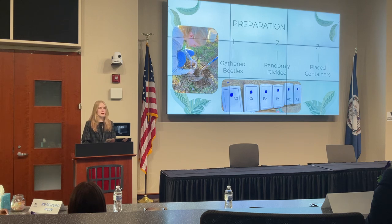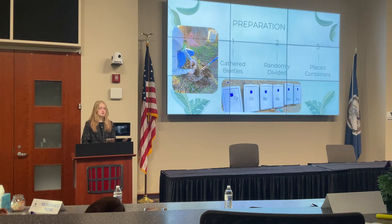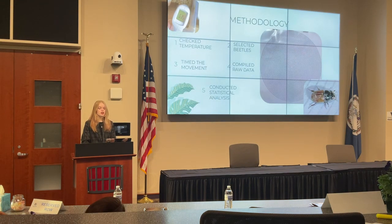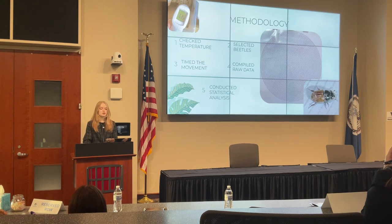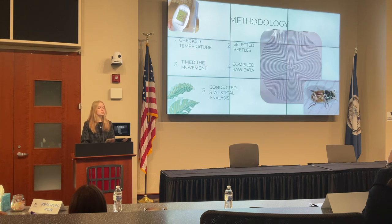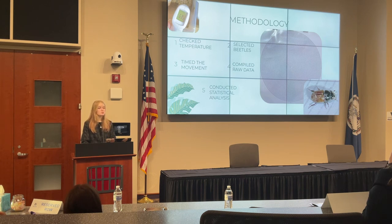In order to effectively carry out my methodology, I had to prepare by gathering my beetles from the farm, then randomly divide them into three sets of containers. These containers were then randomly placed into one of three locations: outside, in my garage, or in my bathroom, in order to get a full spectrum of temperatures. For data collection, I checked the surface temperature of the box, then randomly selected a beetle. I placed the beetle on my measuring sheet and started a timer to measure the amount of time it took for the beetle to begin moving. Once the beetle started to move, I recorded the time and kept the timer going until the beetle completely exited the measuring area, then recorded the final time. After completing data collection, I compiled the raw data and conducted my statistical analysis.